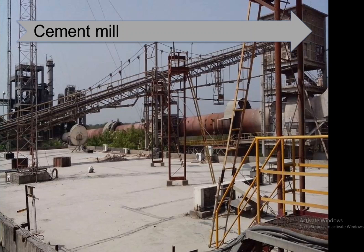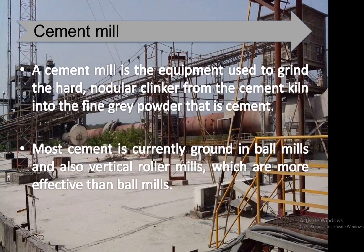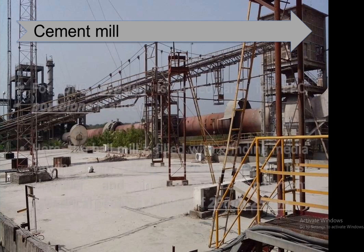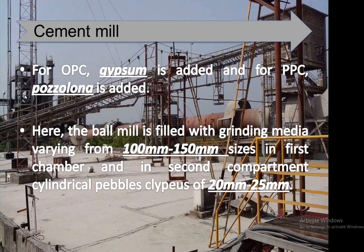A cement mill is the equipment used to grind the hard nodular clinker from the cement kiln into the fine gray powder that is cement, as seen in cement packets in daily use. Most cement is currently ground in ball mills and also vertical roller mills, which are more effective than ball mills. For Ordinary Portland Cement, gypsum is added to the clinkers; for Portland Pozzolana Cement (PPC), pozzolana is added. The first chamber of the ball mill is filled with grinding media of 100 to 150 millimeters, and the second compartment uses cylindrical pebble slabs of 20 to 25 millimeters.